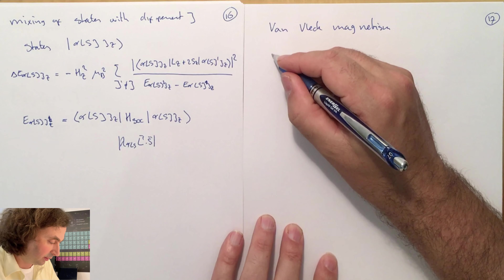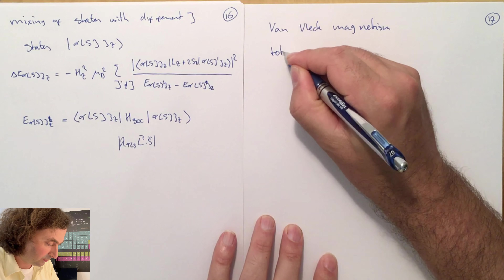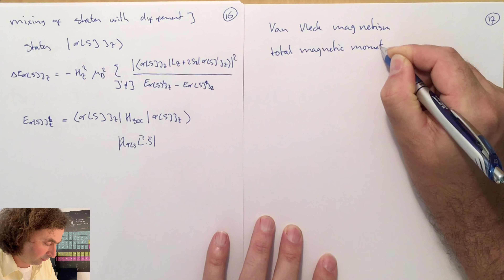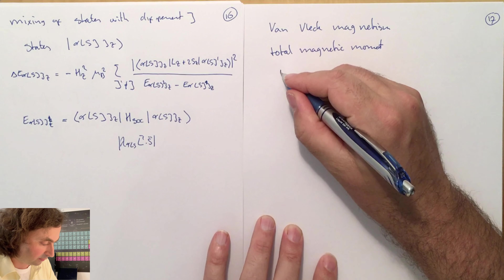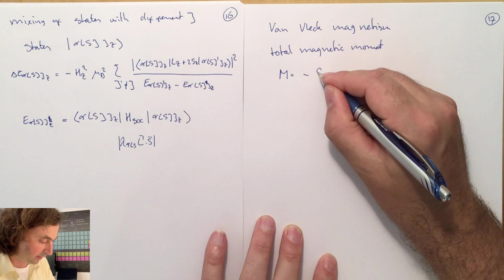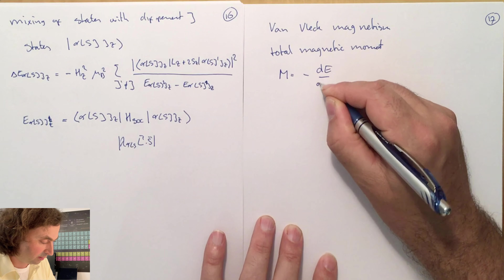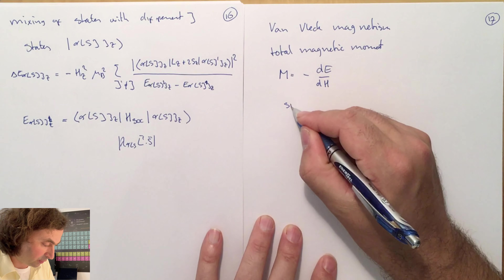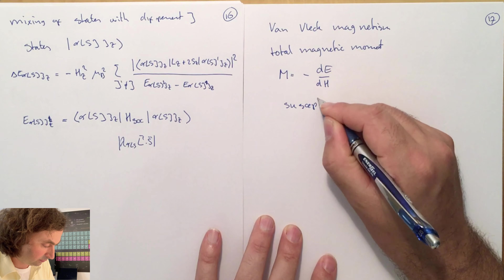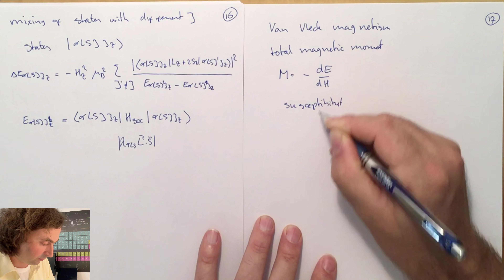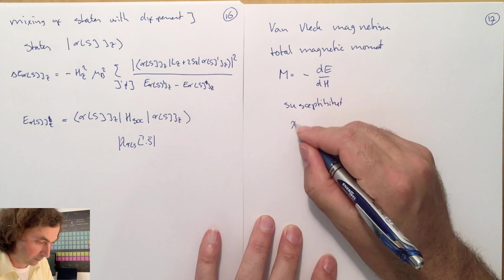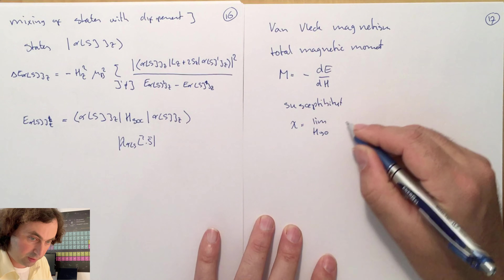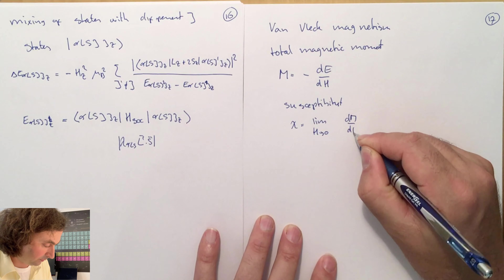The energy of states alpha LS J Jz is given by the expectation value of the spin-orbit coupling operator lambda_{α,LS} times L·S. The magnetic moment induced due to the mixing of states with different J is the Van Vleck magnetic moment, or Van Vleck magnetism. The magnetic moment of a state is given by the change of energy with respect to the applied magnetic field, and the susceptibility is defined as the limit of the magnetic field to zero of dm/dH.